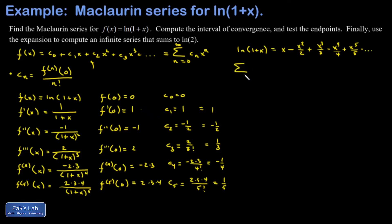Written in series notation, it looks like this. We're starting from the n equals 1 term, and I want to start out with a positive number, so I'm going to put a negative 1 to the n plus 1 in here. So when I plug in n equals 1, I get negative 1 squared, meaning I'm starting positive. And then x to the n over n.